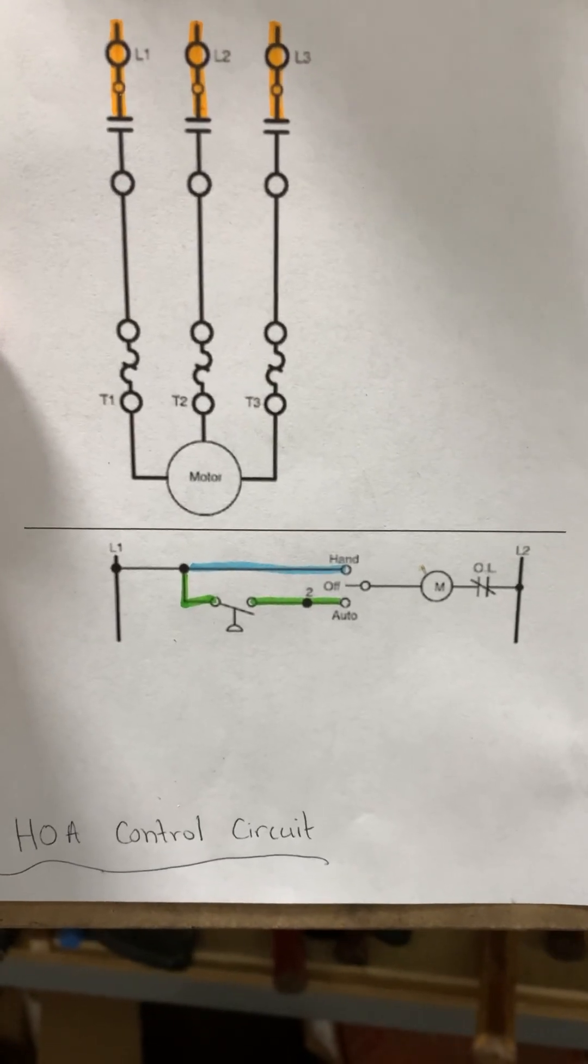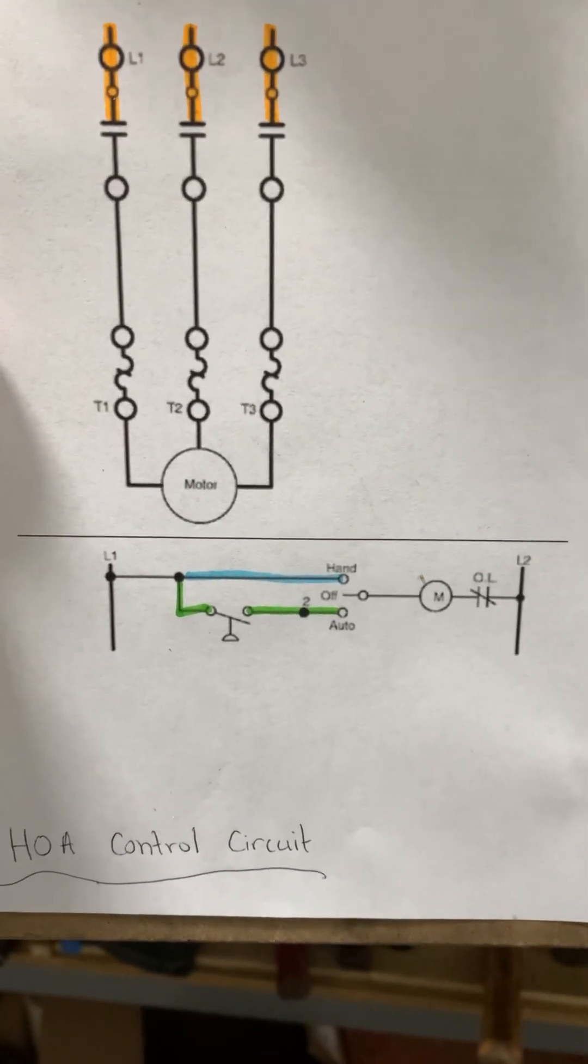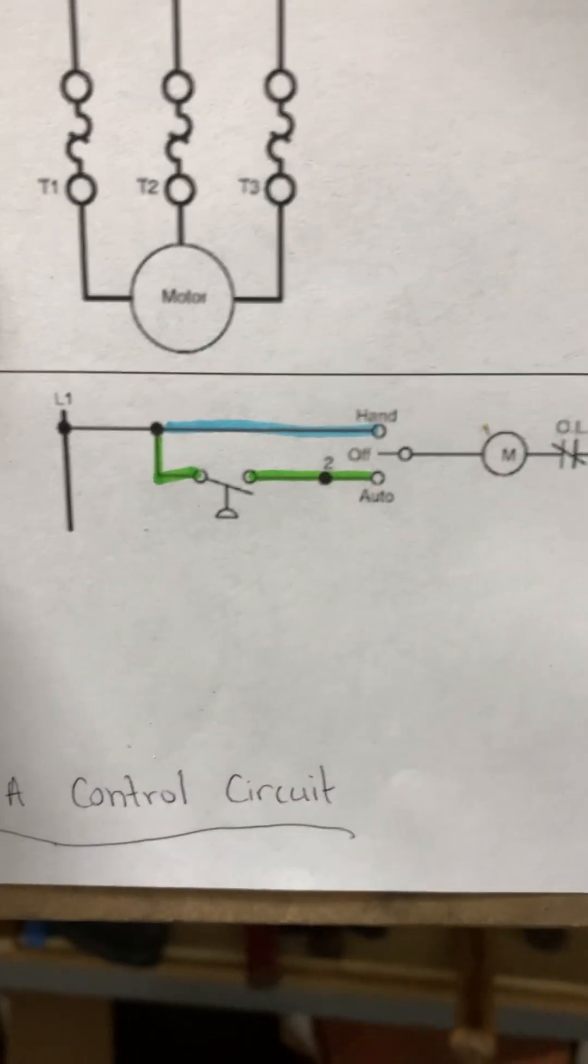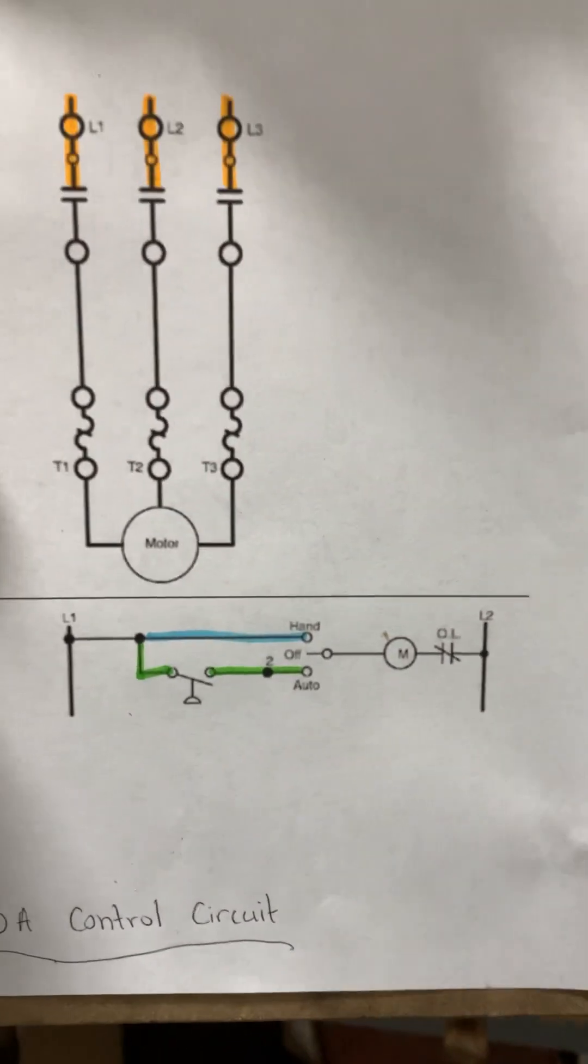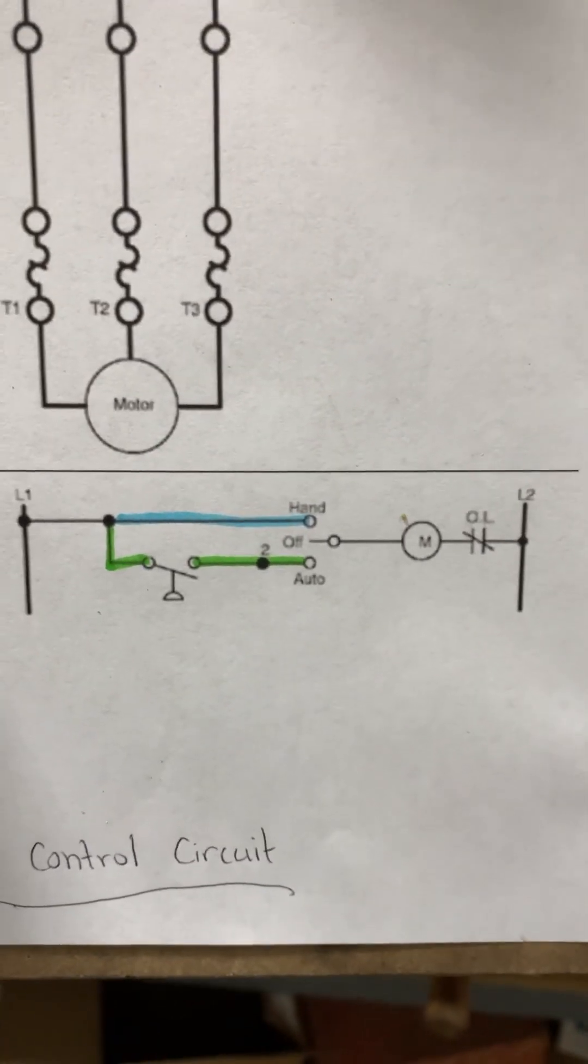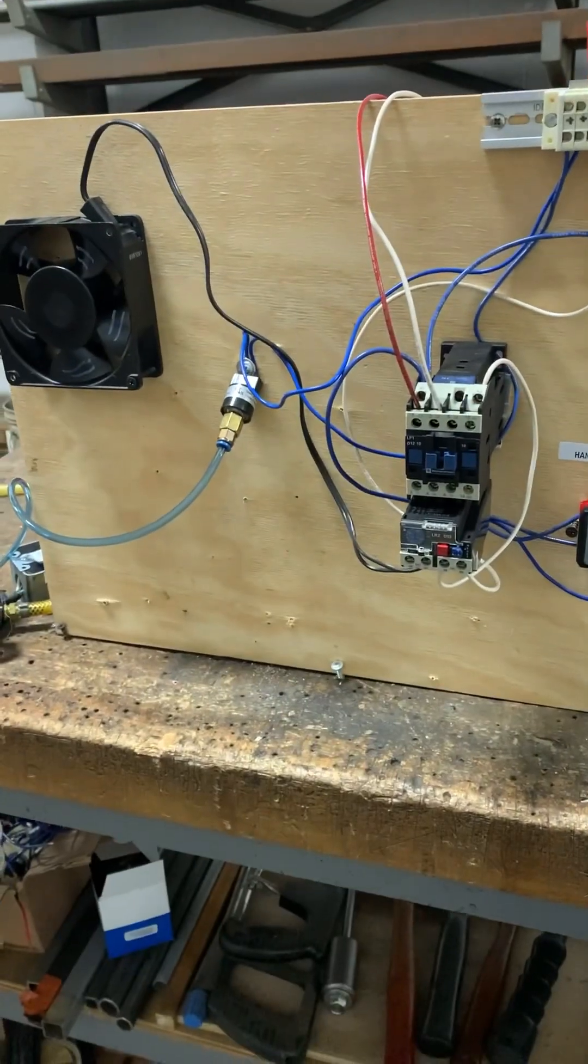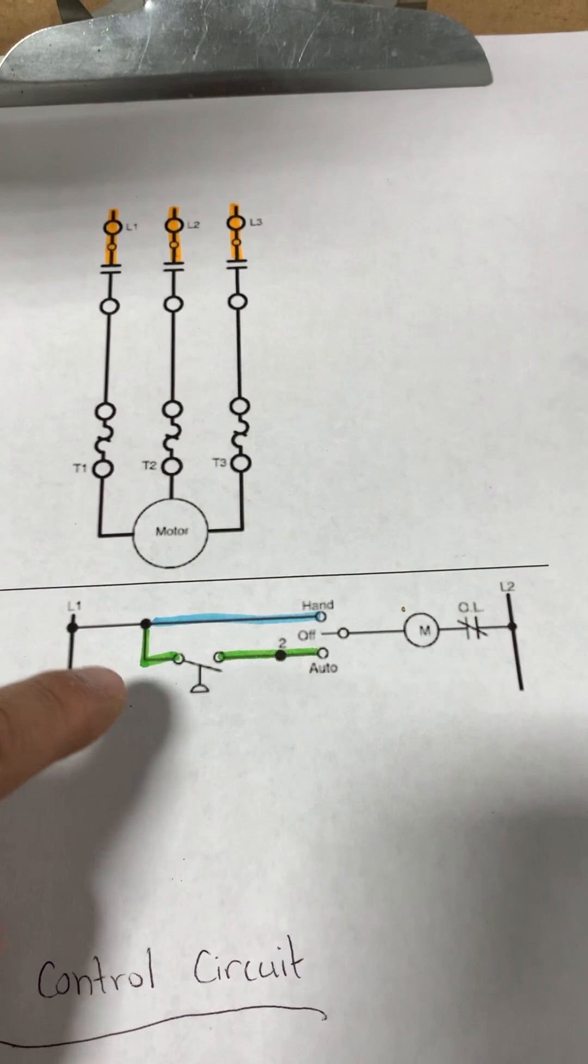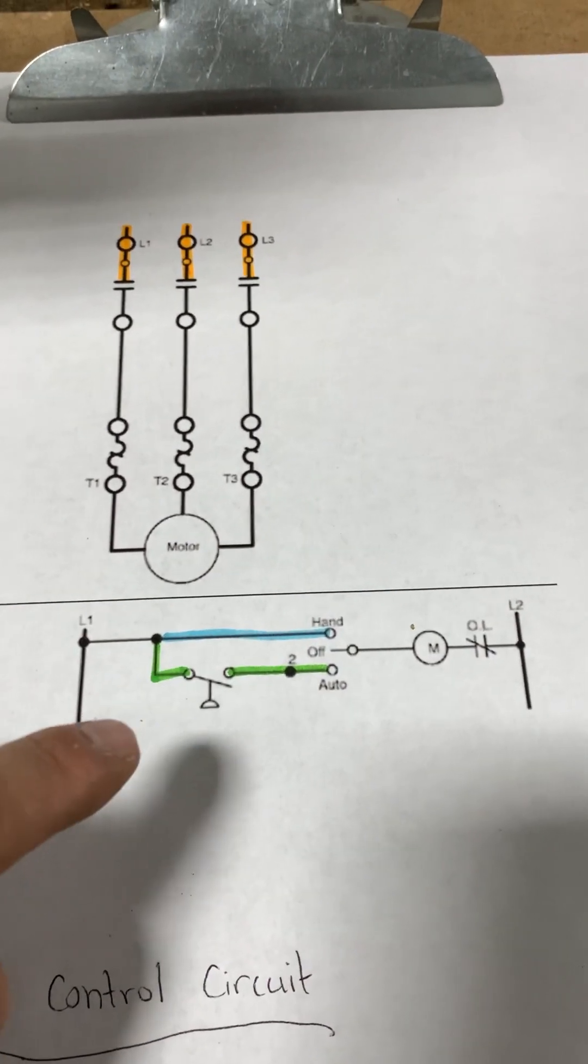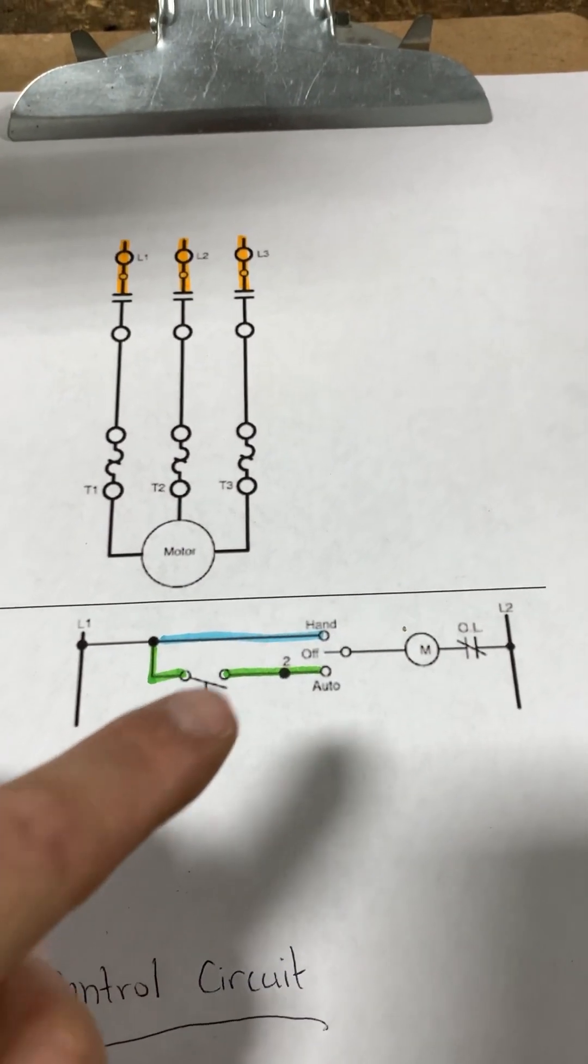So this is a HOA circuit or hand off auto control circuit in its most basic and simplest form. It doesn't get any simpler than this. And I do have it wired up today so you can see exactly how it works. There's not many components to this control circuit at all. Let's identify them first and then we can go over it.